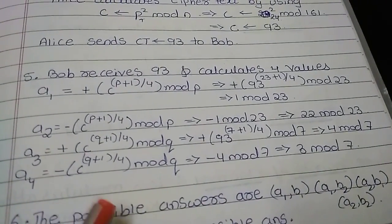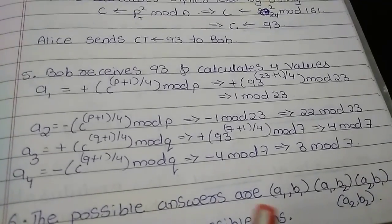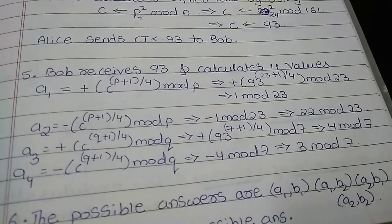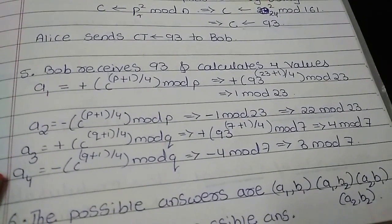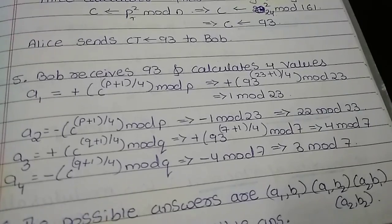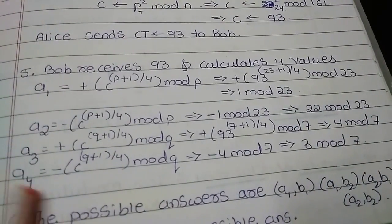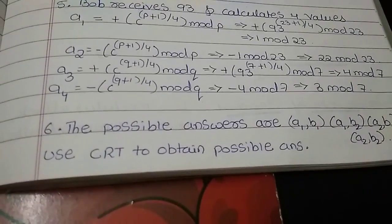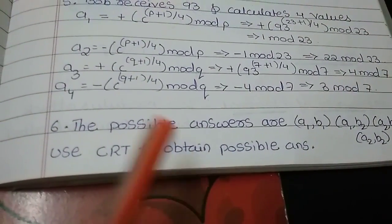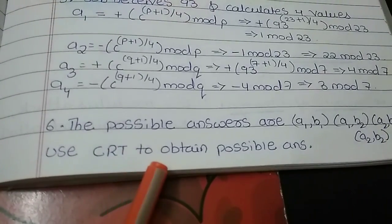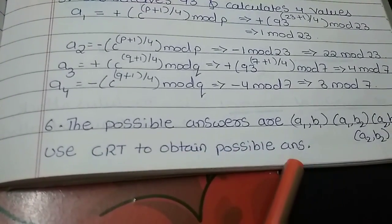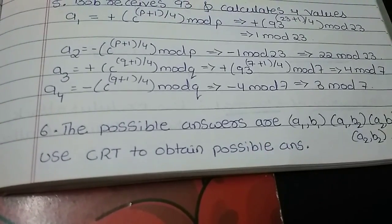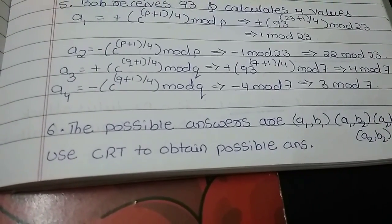So we have got the four possible answers in the form of A1 B1, A1 B2, A2 B1, and A2 B2. So these are the four different sets of plain text what I got. Now these four different answers whatever we got, we can use the Chinese Remainder Theorem to obtain the possible answer. The possible answer will be our actual plain text sent by the sender.